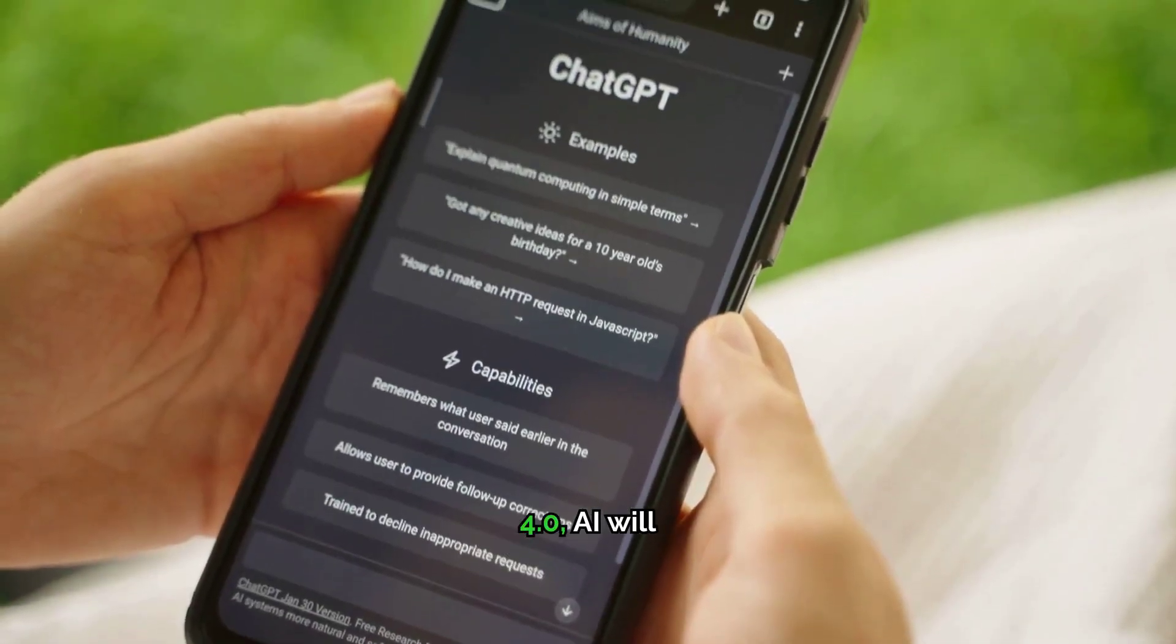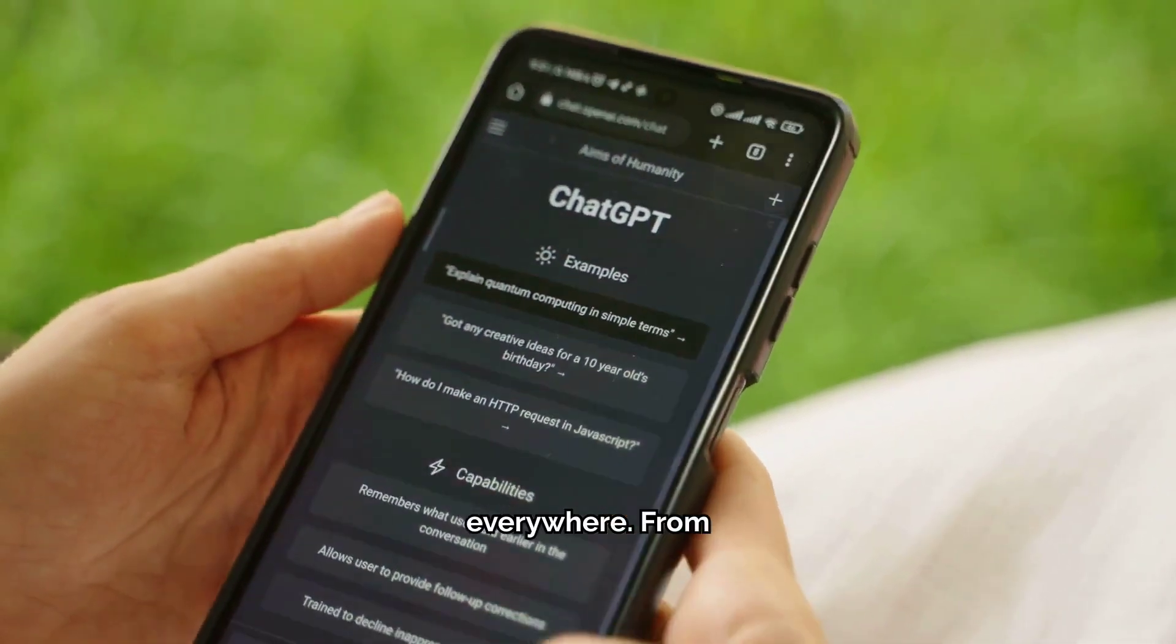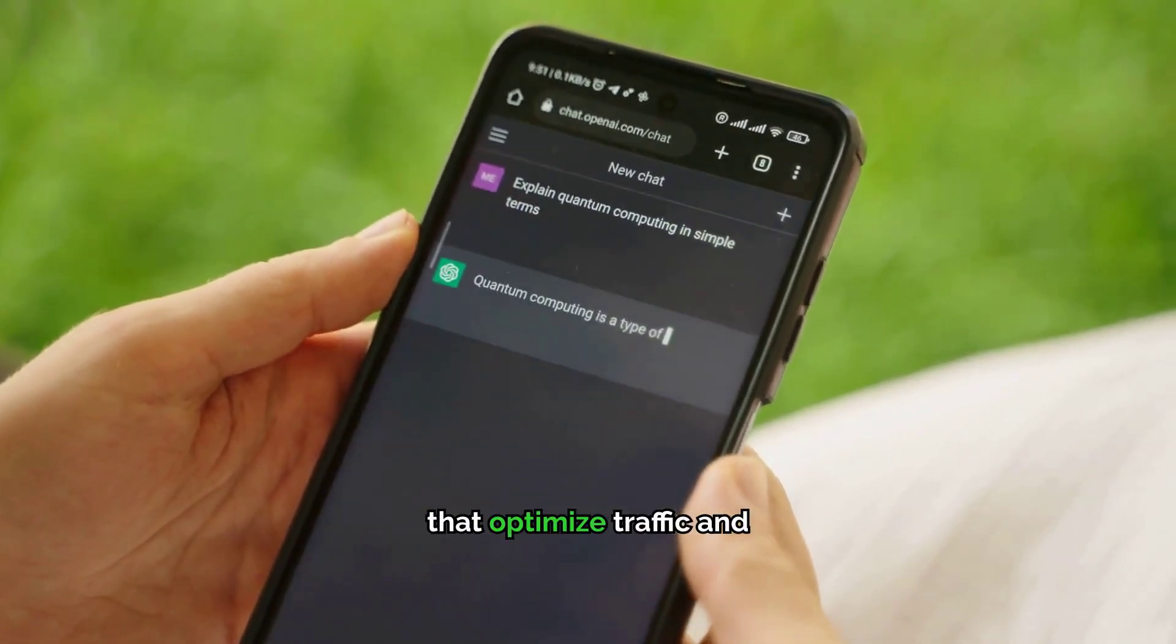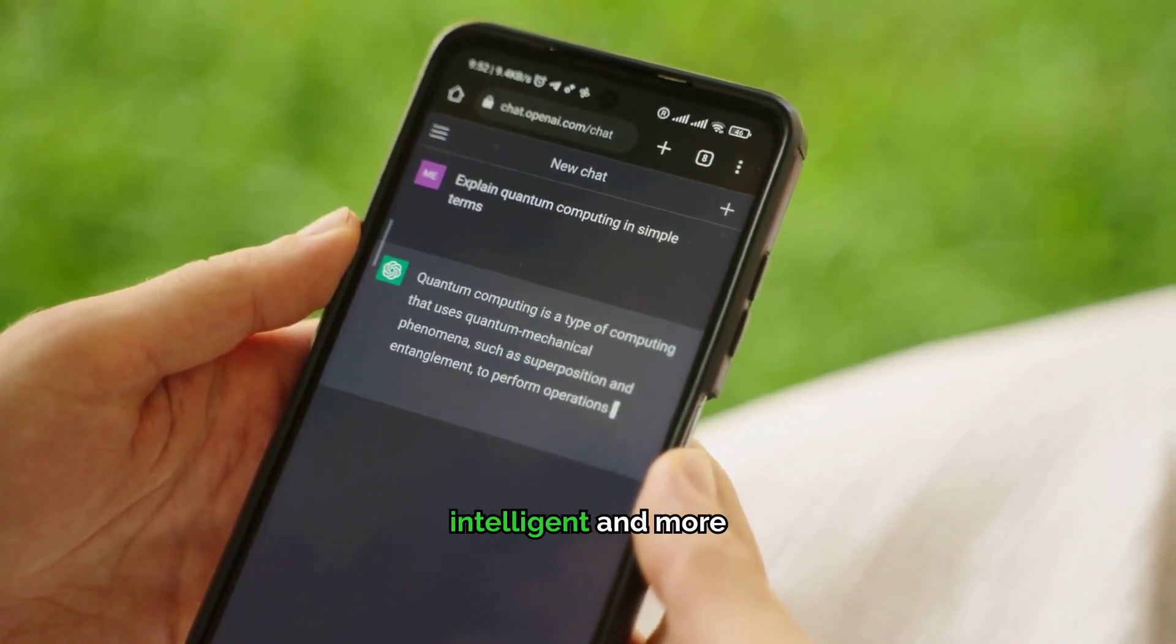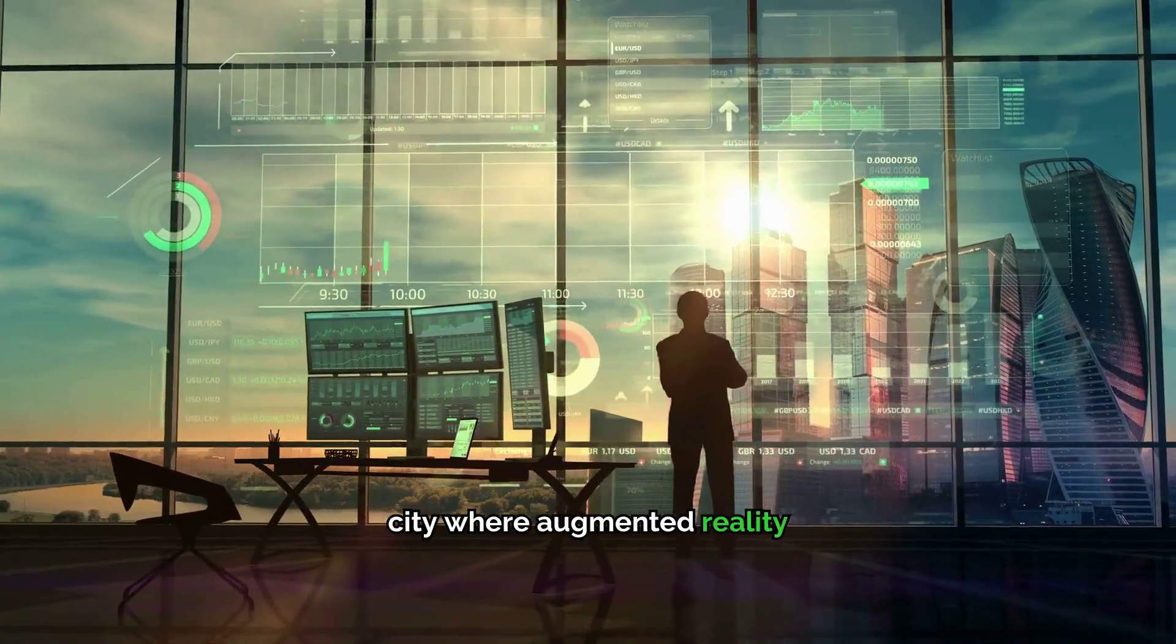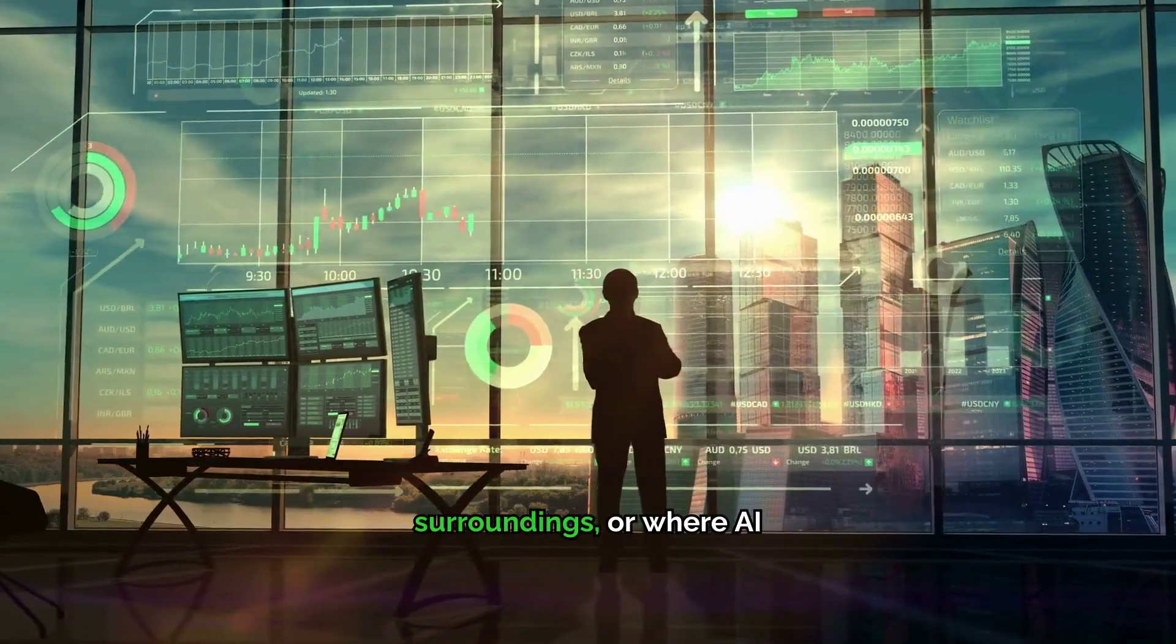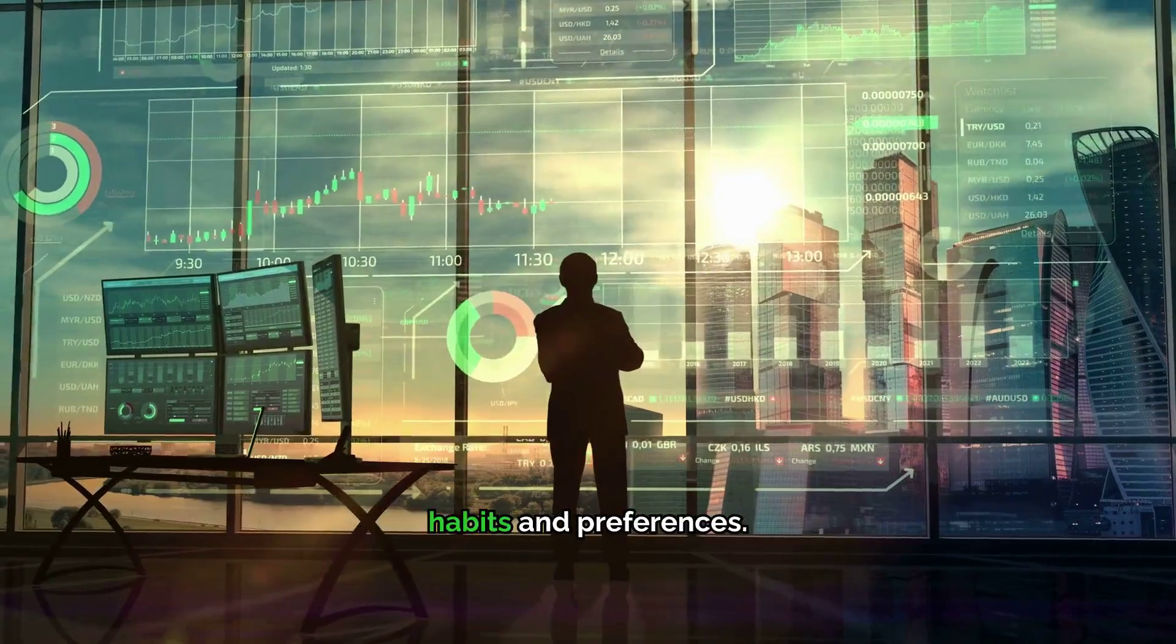In the world of Web 4.0, AI will be everywhere. From personalized virtual assistants that know your preferences to smart cities that optimize traffic and energy use in real-time, the Internet will become more intelligent and more integrated into our lives than ever before. Imagine walking through a city where augmented reality overlays provide real-time information about your surroundings, or where AI assistants help you make everyday decisions based on your habits and preferences.